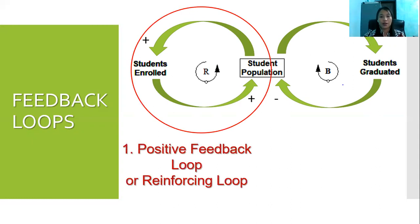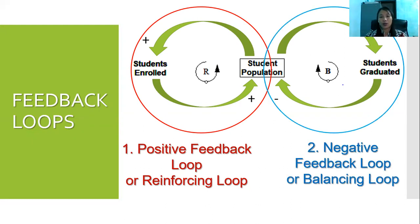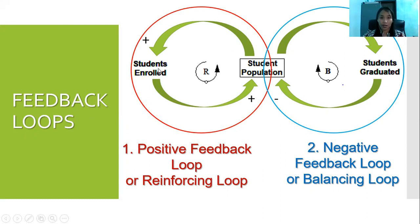This one is the reinforcing loop or positive feedback loop, and this one is the negative feedback loop or balancing loop. For the reinforcing loop, if there are more enrollments today, it will lead to more enrollment in the future, which leads to more student population. For the balancing loop, if more students graduate, it leads to a decrease in population.